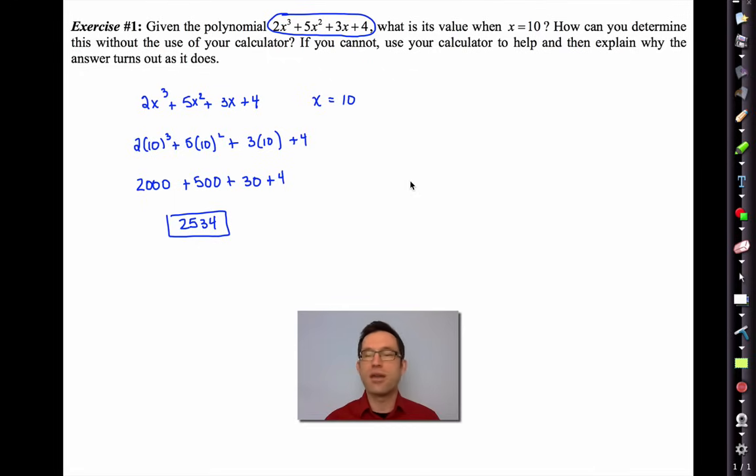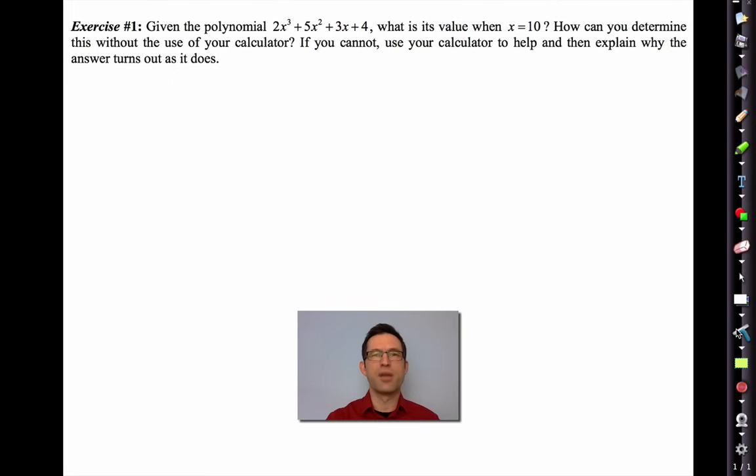You see, polynomials are just an extension of what's called our base 10 number system. When we have a base 10 number like 7,358, this is just 7 times 10³ + 3 times 10² + 5 times 10¹ + 8. The big difference is that when we have a polynomial, the base doesn't have to be 10, it could be anything. If we have a polynomial and we decide to put in a base of 10, then it makes it very easy to think about what its value is. Let's now talk about multiplying polynomials.